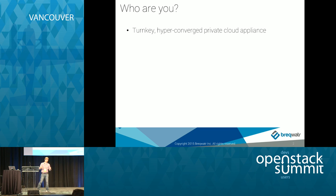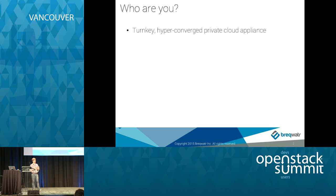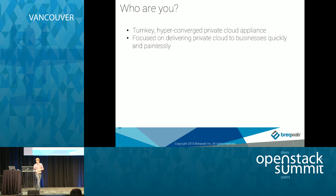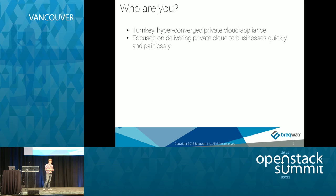Breakwater is a hyper-converged turnkey private cloud appliance — which wins me all the buzzword bingo points I can get. We have a 2U solution that has four nodes, fully HA control plane, has compute and storage. Instead of just dropping a controller on your floor, we're literally talking about installing a full HA OpenStack cloud with the initial resources to get a private cloud up and running.